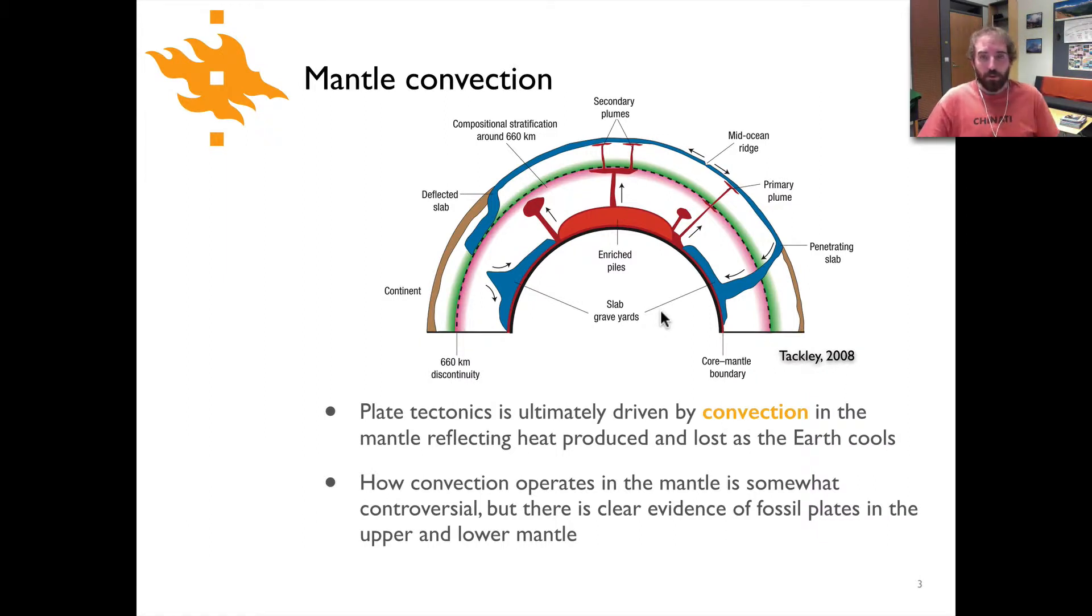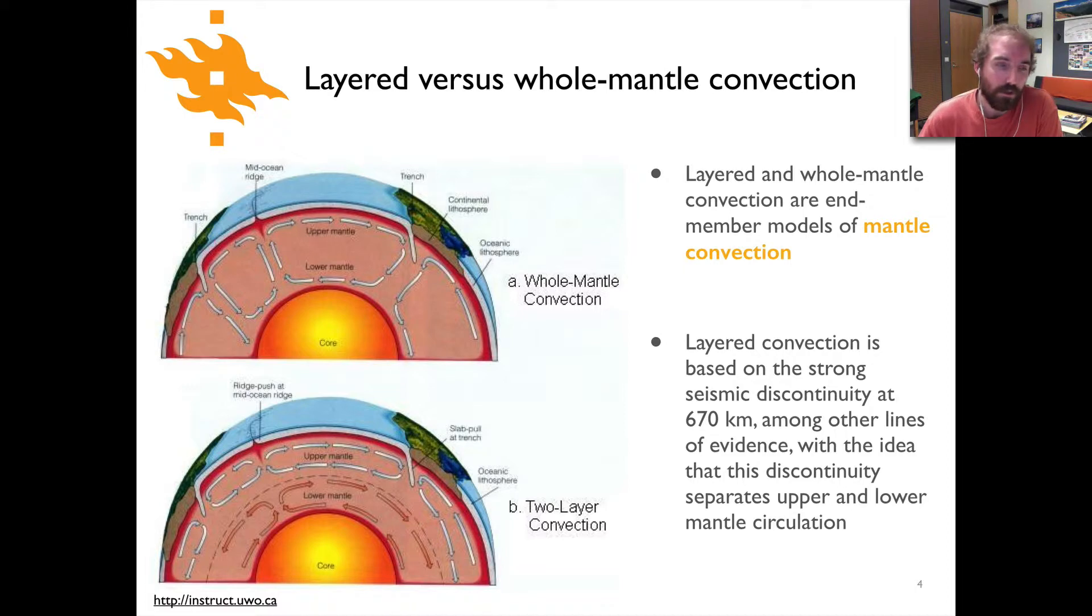This is simply one picture of how mantle convection operates. The details of mantle convection are still somewhat controversial. There are essentially two main camps: those favoring whole mantle convection where convection cells span from the core-mantle boundary up to the base of the lithospheric plates, and the model of two-layer convection where the upper mantle convects independently with separate convection cells in the lower mantle. The main dividing boundary is at about 670 kilometers depth where there's a major phase transition in the mantle minerals.